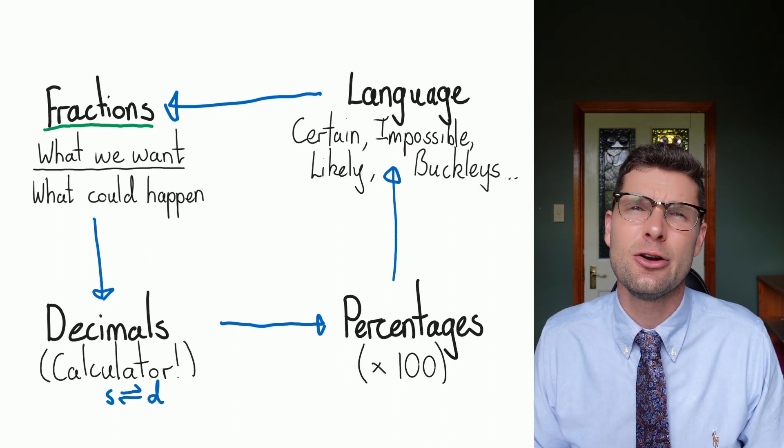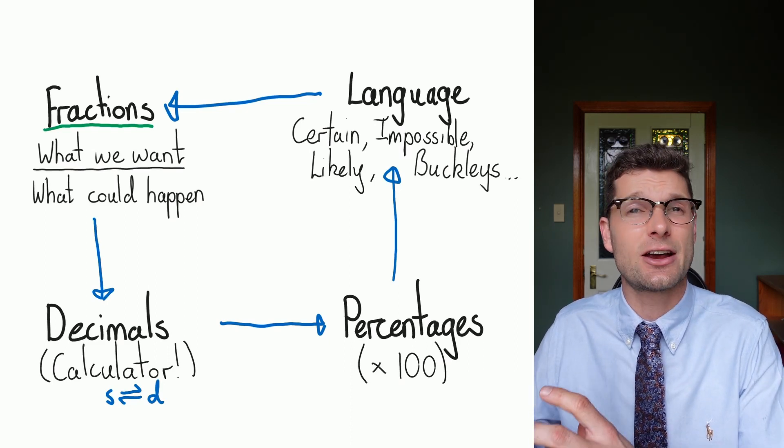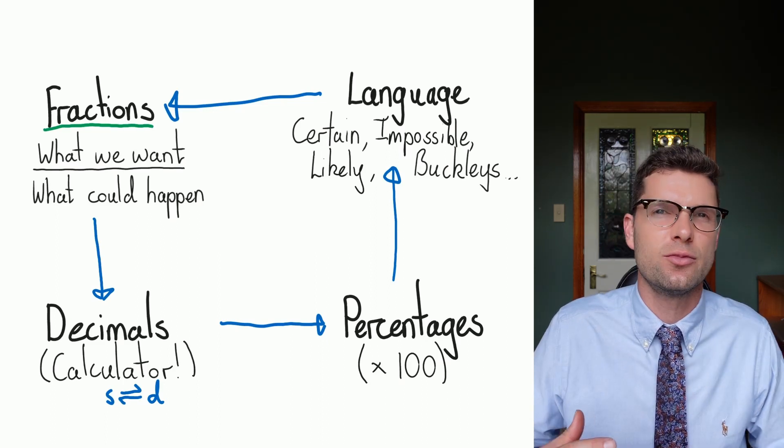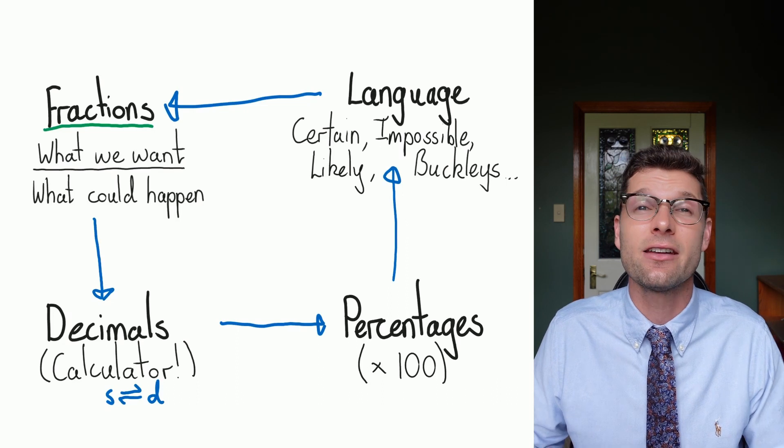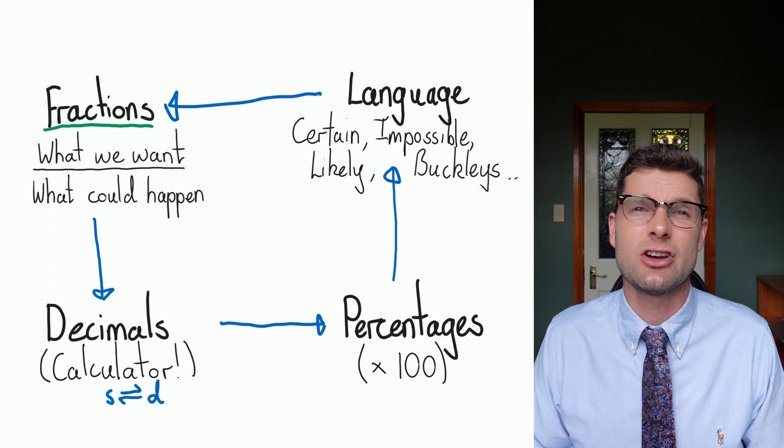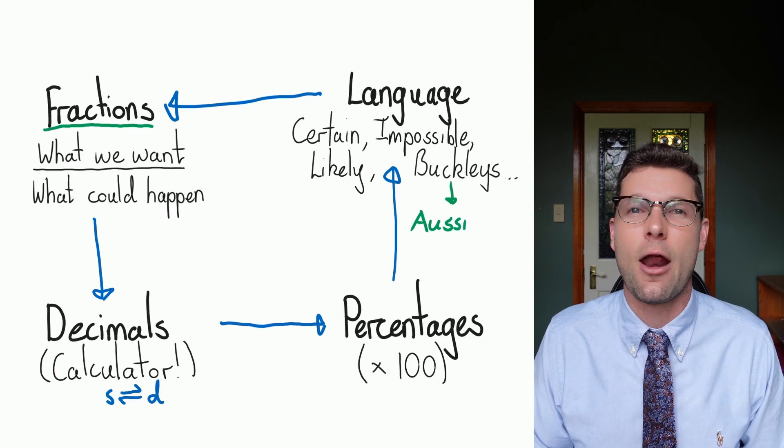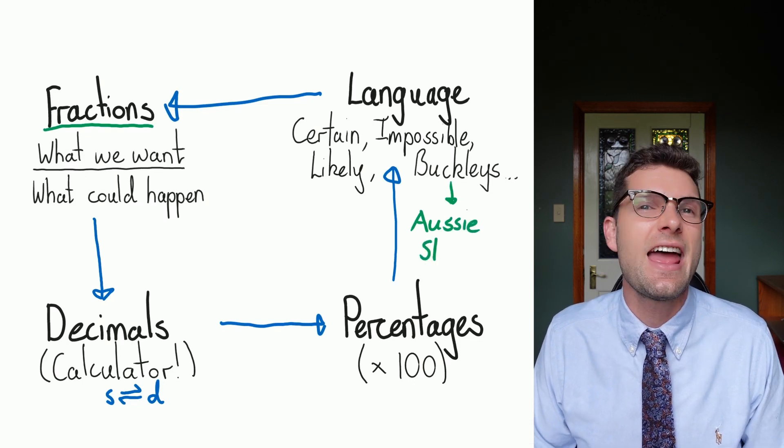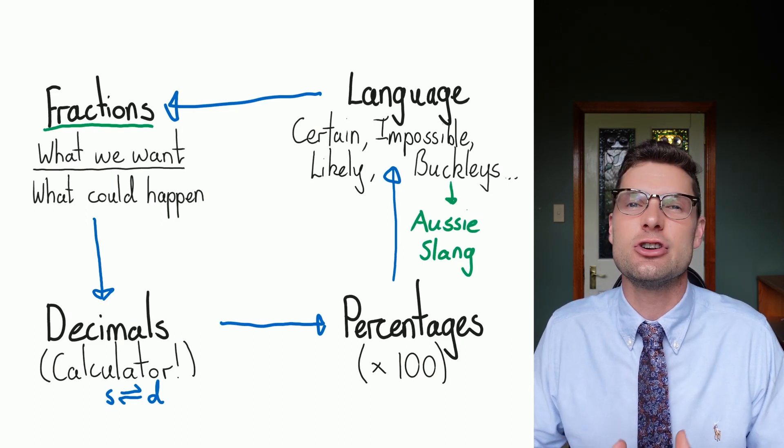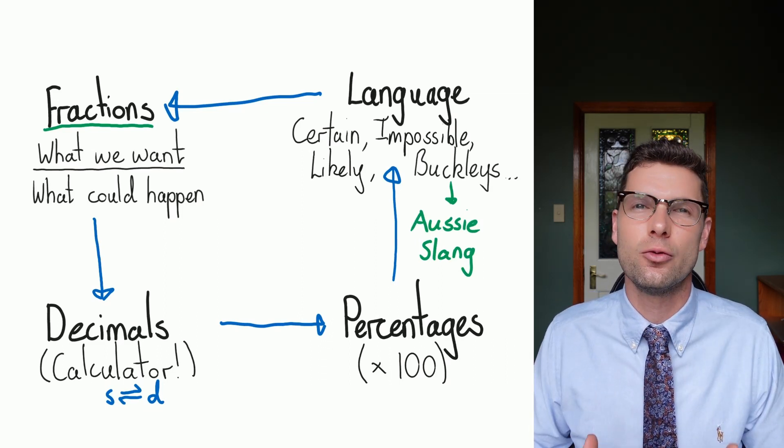But then the reason that this gets a little bit harder is we've got to be able to turn our fractions, our decimals, and our percentages into actual language so we can communicate it really effectively to someone else. So words like impossible, certain, likely, unlikely are all things that you need to know what they actually mean. And then you even have regional dialects where someone might say something and you're just expected to know what it means. For example, if you said that that horse has Buckley's chance of winning, it means that it wouldn't have any chance of winning. And that's something in Australia you might have to know. Just making sure you know the language around probability takes this from a maths lesson to something that you'll definitely use in the real world.